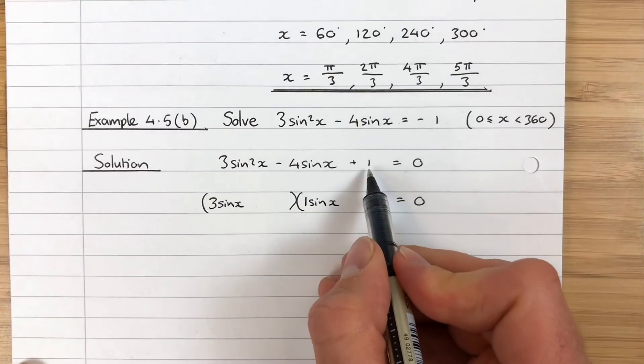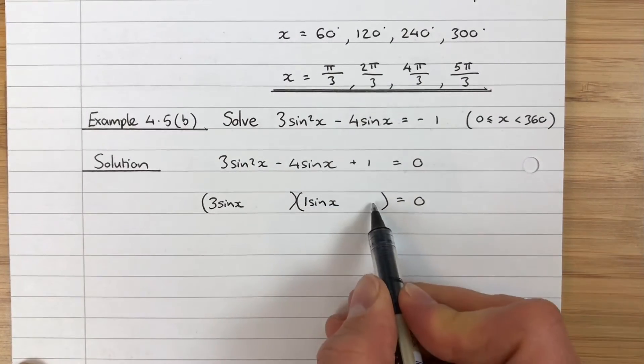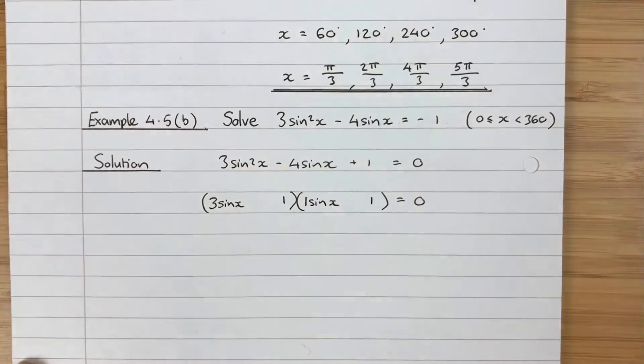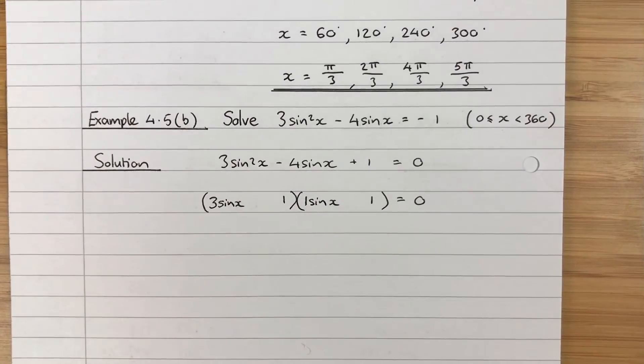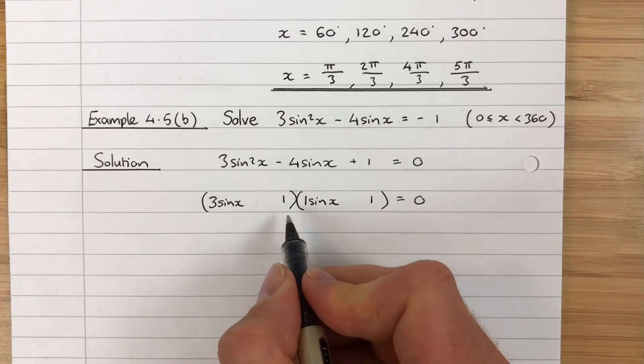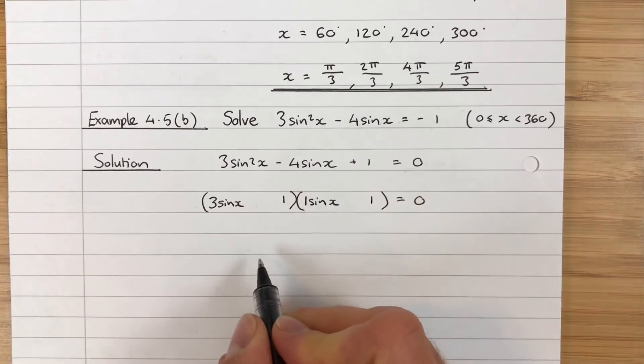Let's go to our last term, which is 1. How do I get 1? This times this must give me 1. Well the only way to do it is 1 times 1. So actually all I have to do now is fill in my signs. Let's look at what I get when I multiply these two things together and what I get when I multiply these two things together, and then figure out how I would get to -4sin x.